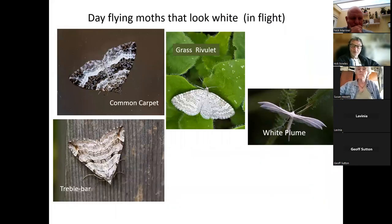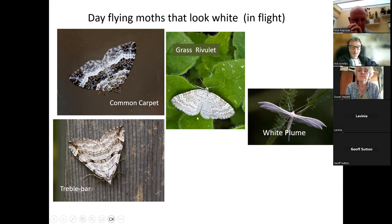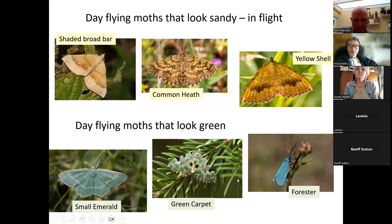Very quickly, some white day-flying moths: the common carpet is very pretty; the brass rivulet feeds on yellow rattle, which is becoming much commoner; the white plume looks like a crucified moth; and the treble bar is quite a big moth with three obvious lines across it. Some moths look yellowy shaded — the broad bar can be very common on some sites, and the common heath is actually quite scarce in the Chilterns.